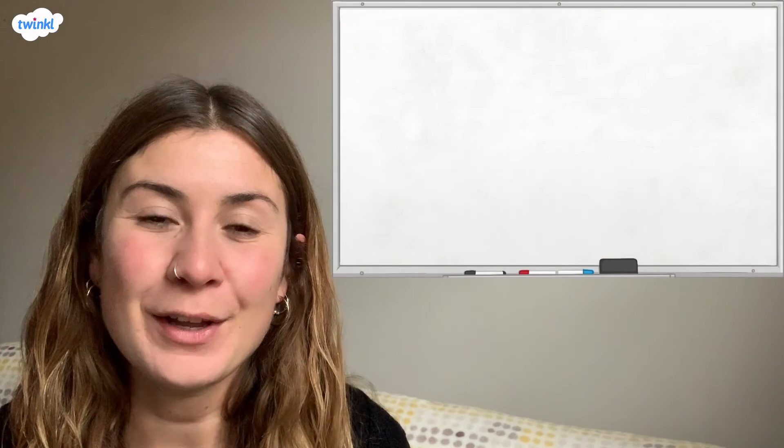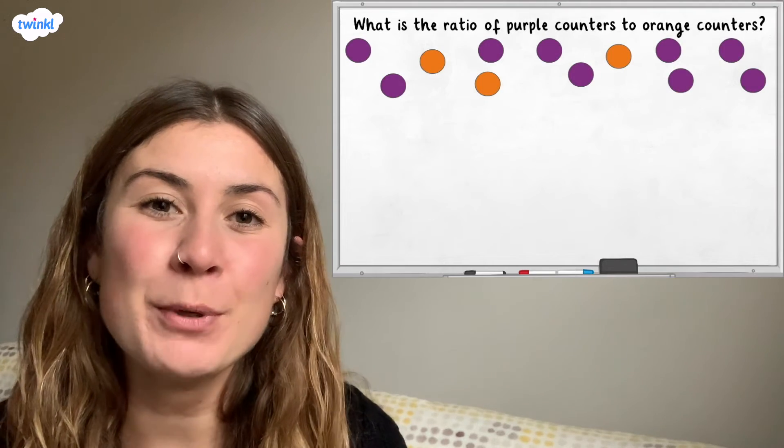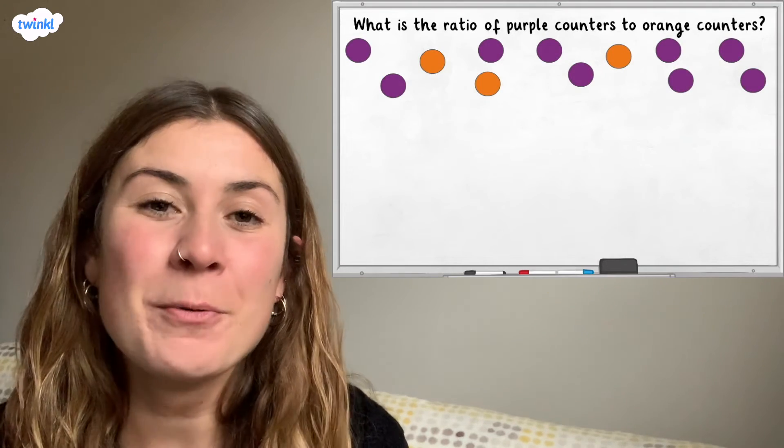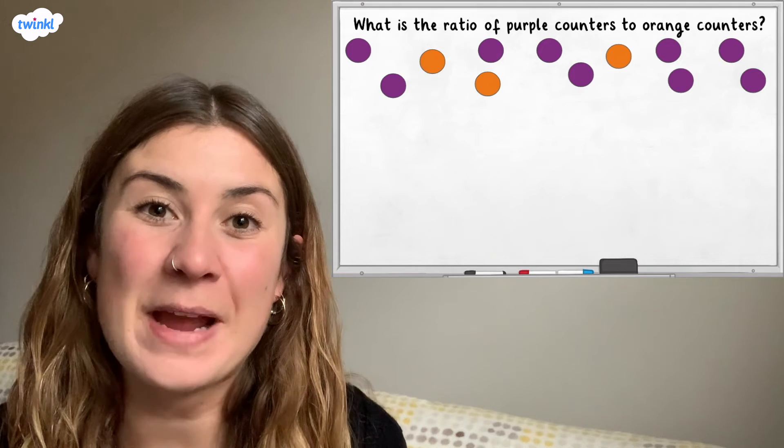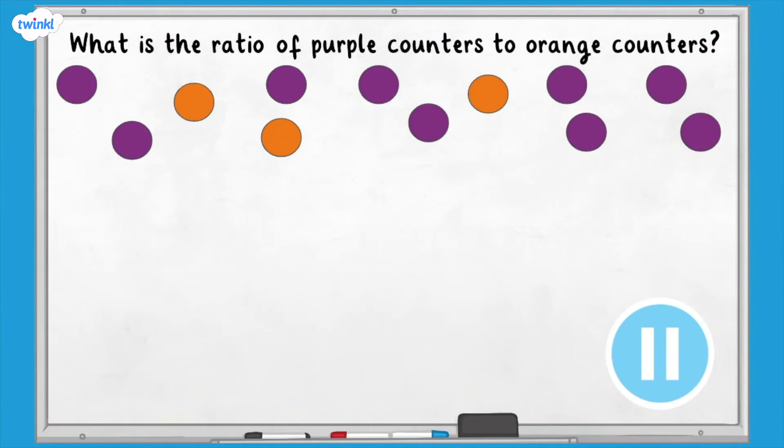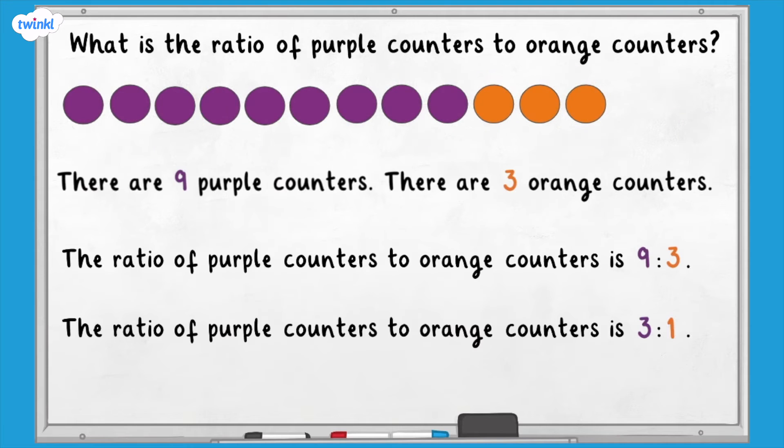Now it's your turn. What is the ratio of purple to orange counters here? Remember to simplify the ratio if you can. There are nine purple counters and three orange counters. The ratio of purple counters to orange counters is nine to three. We can divide both numbers by three to simplify the ratio to three to one.